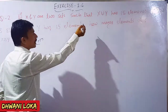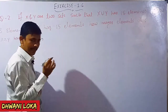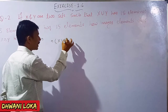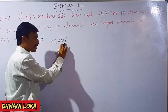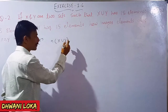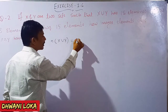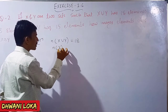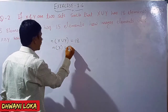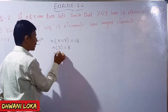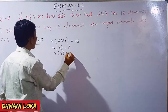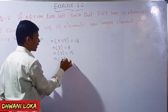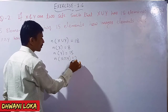Given: N of X union Y is equal to 18 elements. X has 8 elements and Y has 15 elements. N represents the number of elements. We need to find N of X intersection Y.